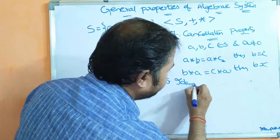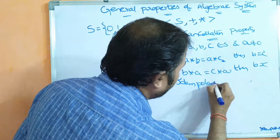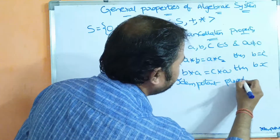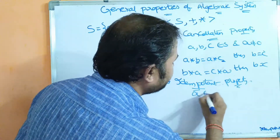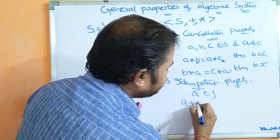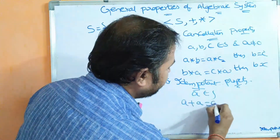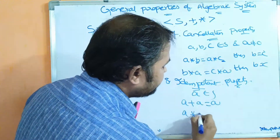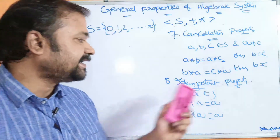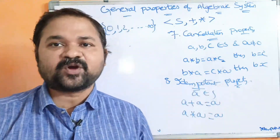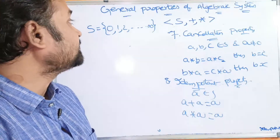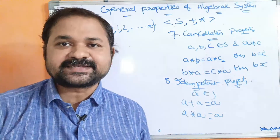The eighth and last property is idempotent property, which is very simple. We take only one element from the set. If a plus a equals a, or a star a equals a, then we can say it satisfies idempotent property. These are the eight important properties of an algebraic system.